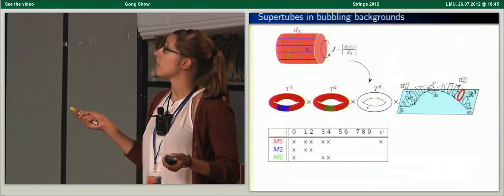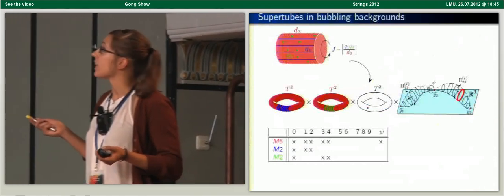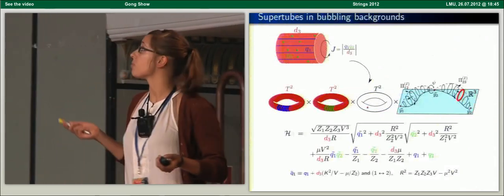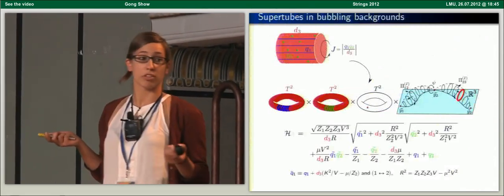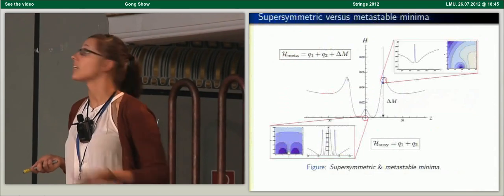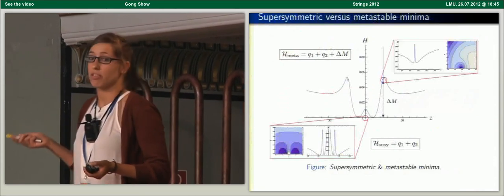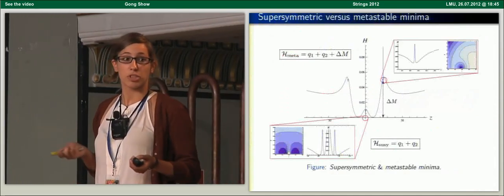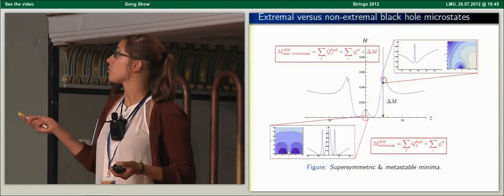We place these tubes in the deep throat region, wrapping part of the compactification torus and the fiber of the base space. The Hamiltonian of the supertubes in these bubbling geometries differs from the flat-space Hamiltonian due to the interaction of the tube charges with the background flux. For some values of these tube charges, this potential turns out to have metastable minima. If we localize supertubes in supersymmetric minima, the energy is just given by the sum of the tube charges. Metastable minima have an excess energy above extremality and correspond to microstates of non-extremal black holes.